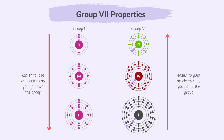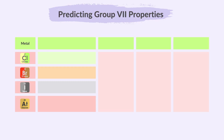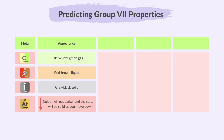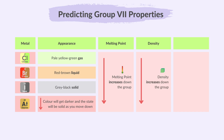As you go down group 7, this attraction weakens, making it harder to gain an electron, so reactivity decreases. We can predict the properties of other elements in group 7 given information about known elements. Now that we know the appearance of chlorine, bromine and iodine at room temperature, we can predict that the next element down the group, astatine, will have a darker colour and be in a solid state. The melting and boiling points increase down the group, so astatine will have a higher melting point than iodine. Density increases down the group, so astatine will be denser and heavier than iodine. Reactivity decreases down the group, so astatine is likely less reactive than iodine.